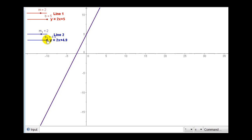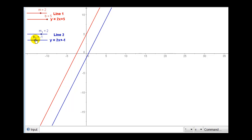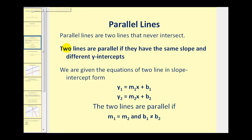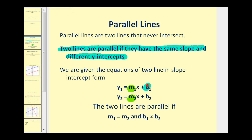This leads us to the conditions that must be met in order to have parallel lines. The slopes must equal each other, but the y-intercepts must be different. Two lines are parallel if they have the same slope and different y-intercepts. Another way to indicate this, if the lines are in slope-intercept form, is that m₁, the slope of line one, must equal the slope of line two, but the two y-intercepts, b₁ and b₂, must be different.